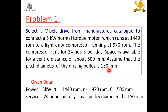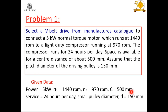The pitch diameter of the driving pulley is given as 150 mm. Let us write down the given data: power transmitted = 5 kW, N1 = 1440 rpm, N2 = 970 rpm. A V-Belt drive is used to run this light-duty compressor. Center distance C = 500 mm. The compressor runs for 24 hours per day. The driving pulley (small pulley) diameter d = 150 mm.